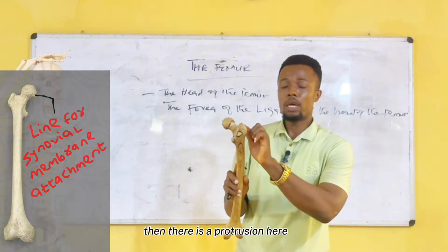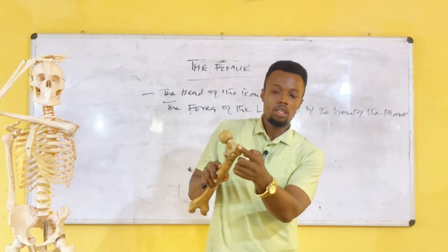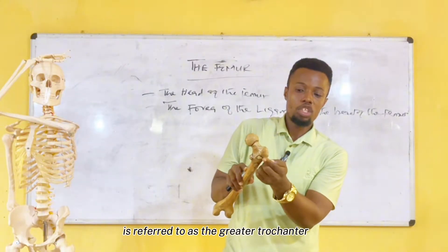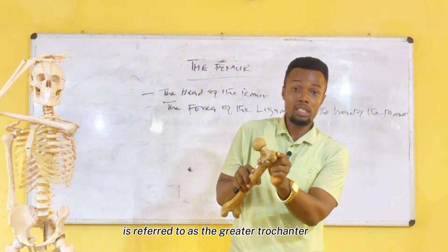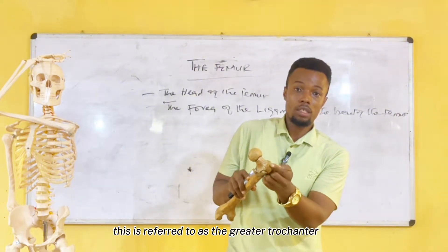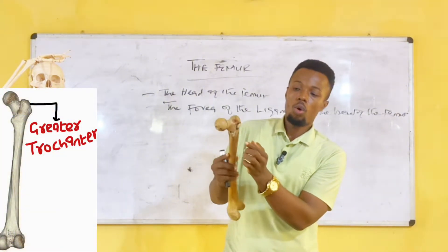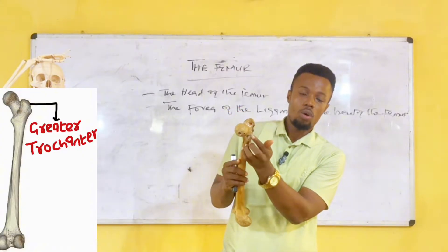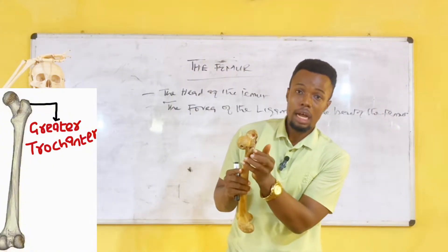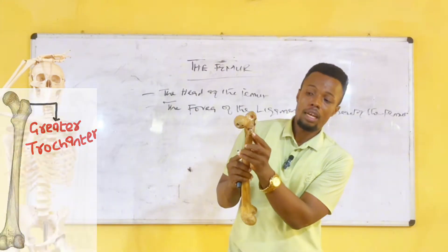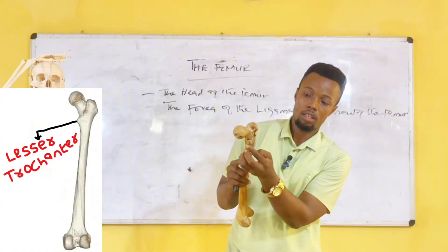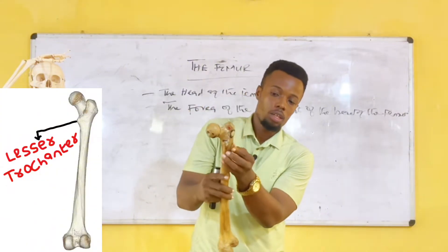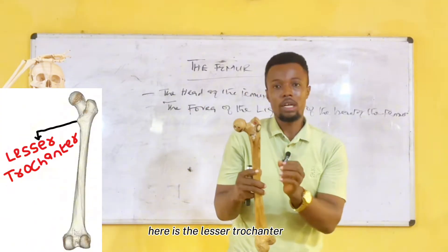There is a protrusion here referred to as the greater trochanter. While inferiorly, there is another protrusion, and this protrusion is referred to as the lesser trochanter. So while this is the greater trochanter, here is the lesser trochanter.